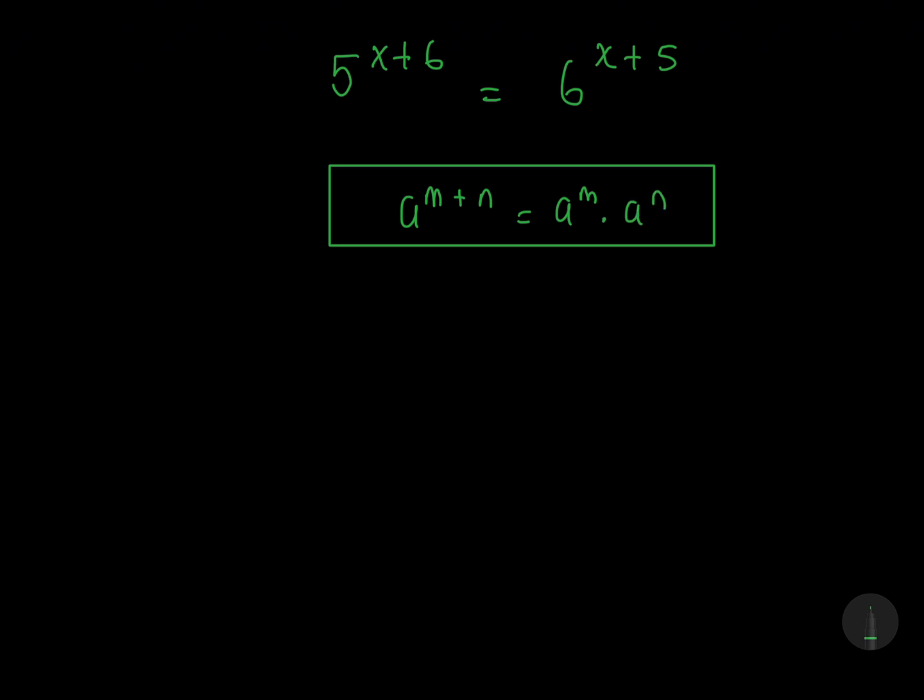Using this law, we'll have 5 to the power x multiplied by 5 to the power 6, and 6 to the power x multiplied by 6 to the power 5.